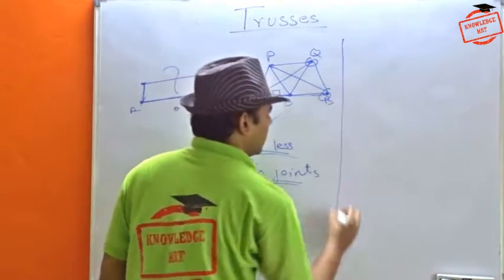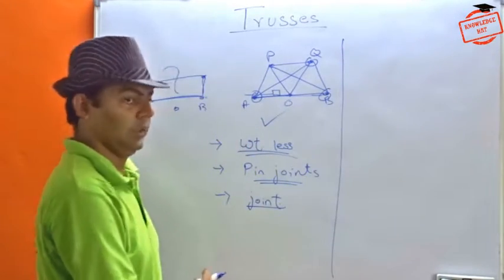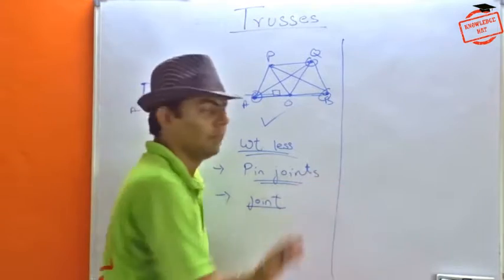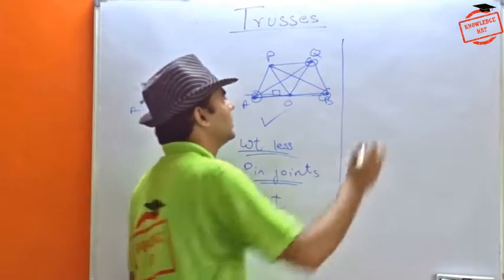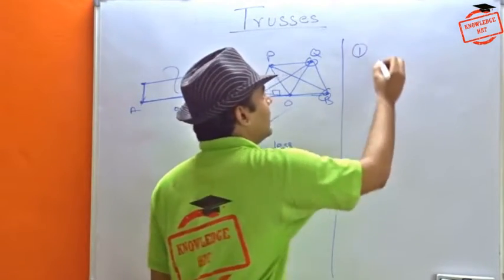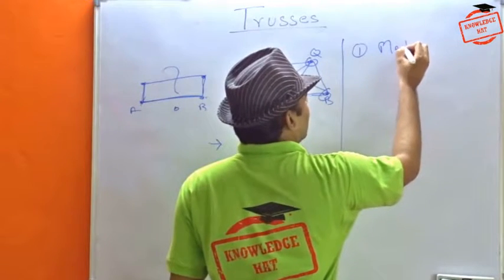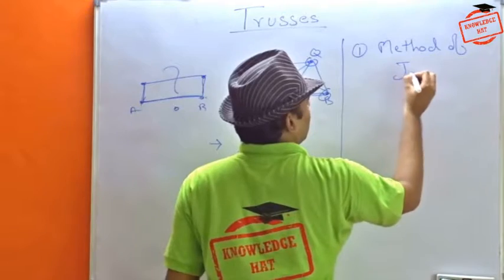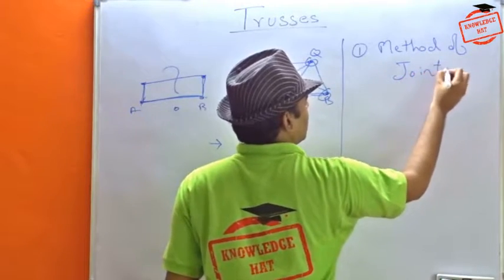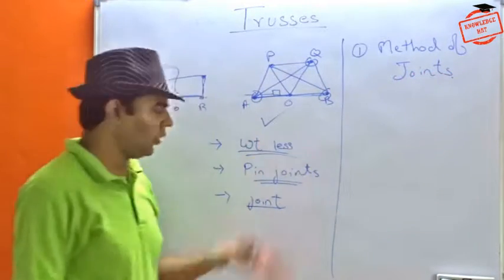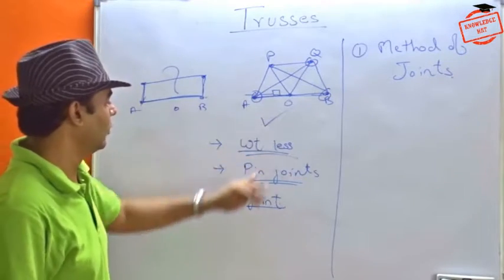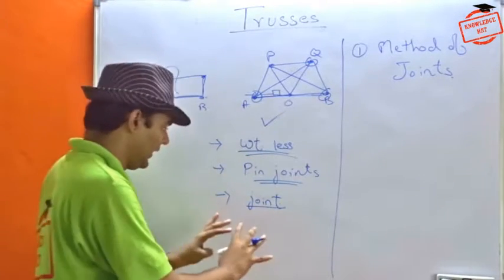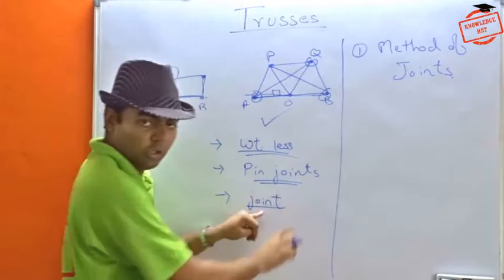Now comes the main part, that is how to solve sums or trusses. There are two methods. The first one is method of joints. So in this method, what we do as we discussed, that all the force is supposed to be concentrated or exerted, but they are only on joints.